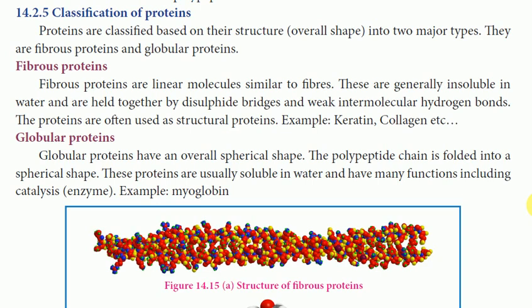Globular proteins have an overall spherical shape. The polypeptide chain is folded into a spherical shape. These proteins are usually soluble in water and have many functions including enzyme catalysis. An example is myoglobin.